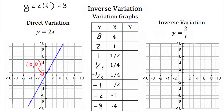Now let's try our inverse variation: y equals 2 over x, or equivalently y times x equals 2. Plugging in x = 4 gives y = 2/4 = 1/2. Plugging in x = 1 gives y = 2. Plugging in x = 1/2 gives y = 2 divided by 1/2 — dividing by a fraction means multiplying by the reciprocal — so y = 4. Plugging in x = 1/4 gives y = 8.